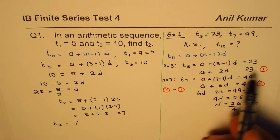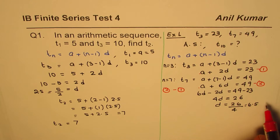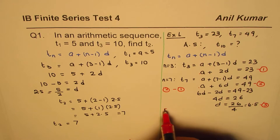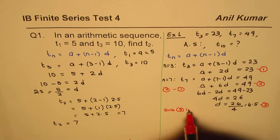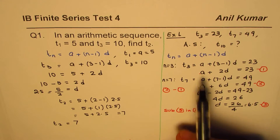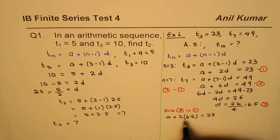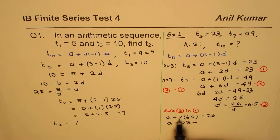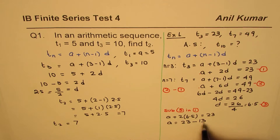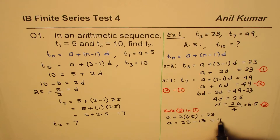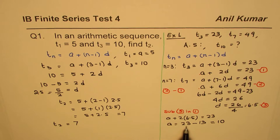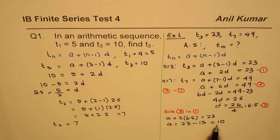Now that we know d, we can find a using equation 1. Substituting d = 6.5 into equation 1: a + 2 × 6.5 = 23, so a + 13 = 23, giving a = 23 − 13 = 10.